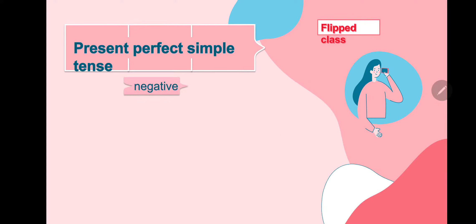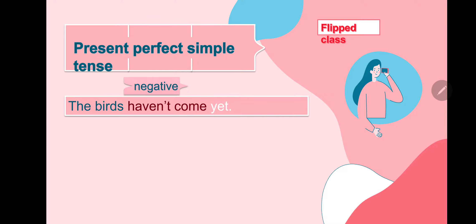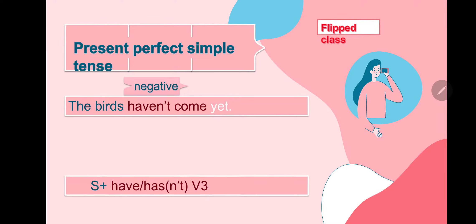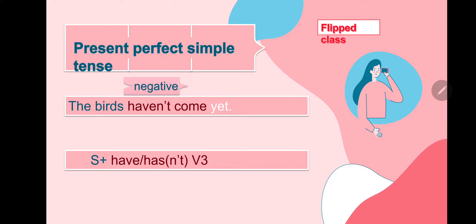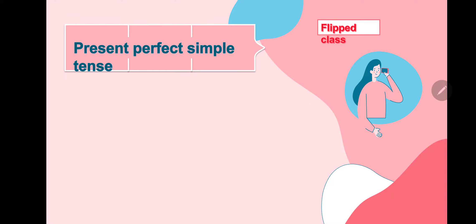Negative: The birds haven't come yet. We put 'not' after have or has. Note that 'yet' is used with negative sentences. Structure: Subject + haven't/hasn't + verb 3.